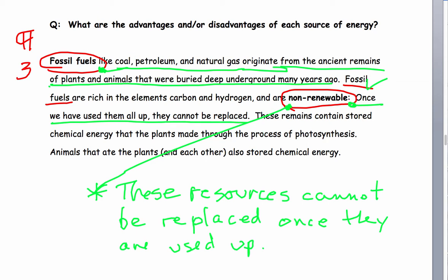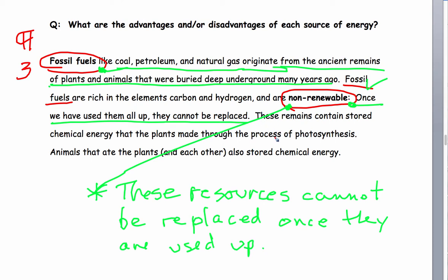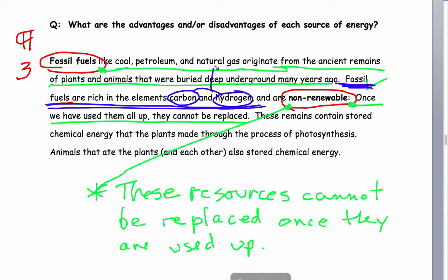Get your blue colored pencil. This is a very important main idea — it is primarily what makes fossil fuels so desirable in our power plants: they are rich in carbon and hydrogen. When you have matter that is rich in carbon and hydrogen, it burns really hot and it burns easily, like gasoline, fuel oil — the things we use in our furnaces, automobiles, and for transportation.